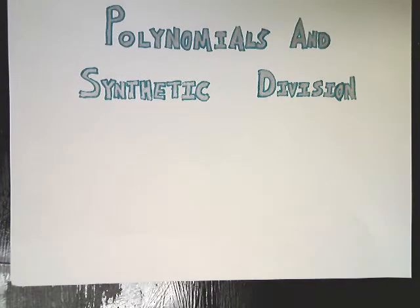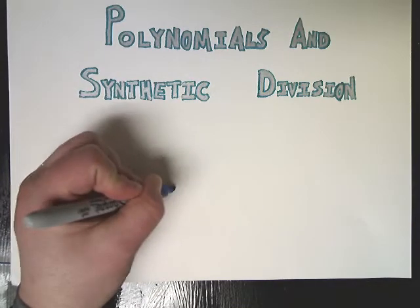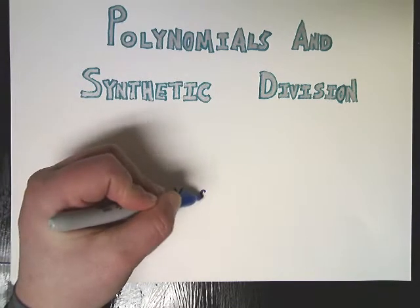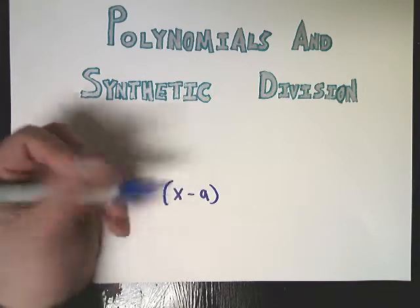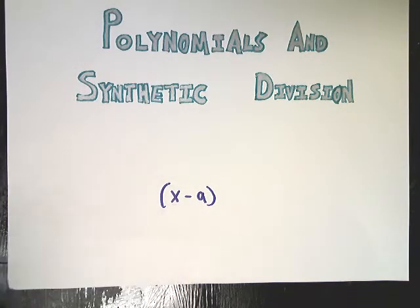The thing about polynomial division with synthetic division is it's way easier, assuming you're doing something that involves the type of factor that's x minus something, or x plus something. If there's a number, like a 4x here, you really can't do synthetic division.